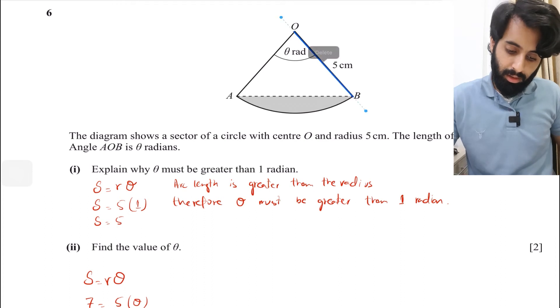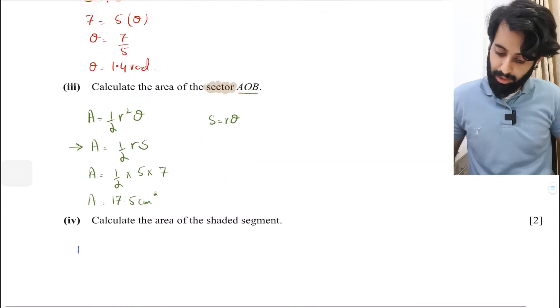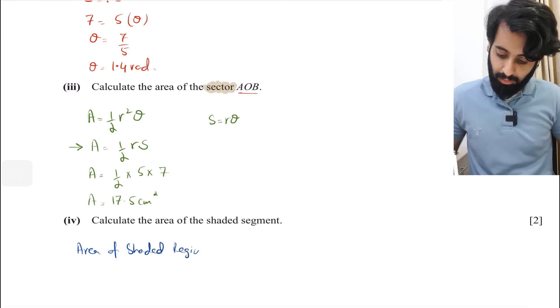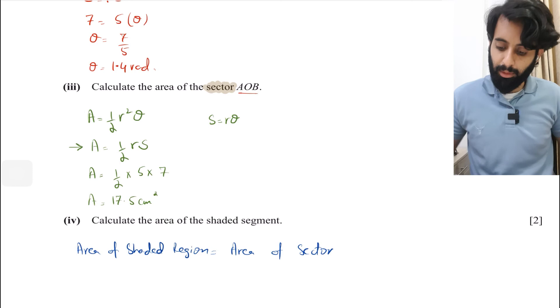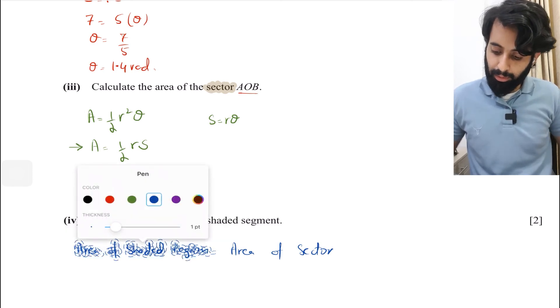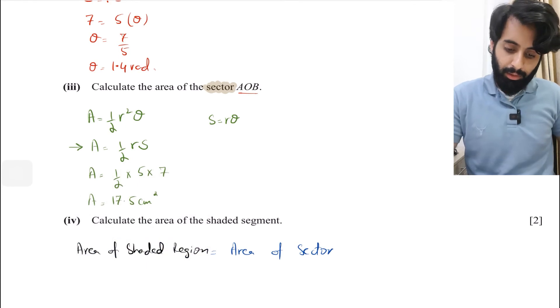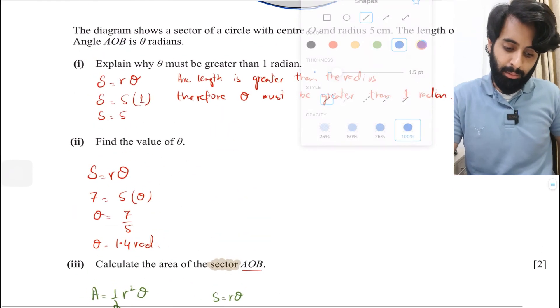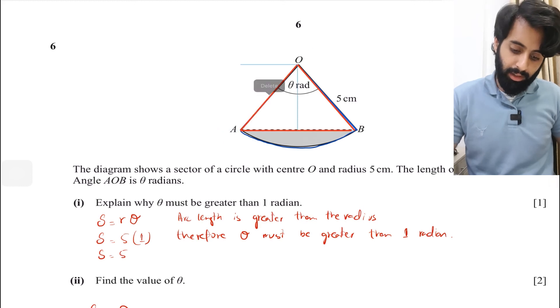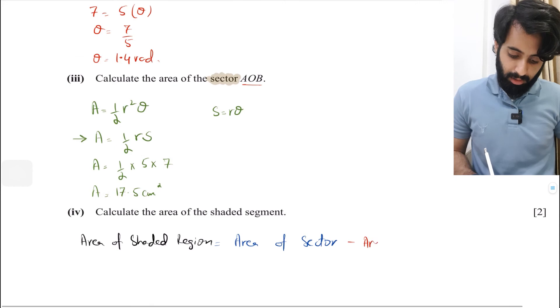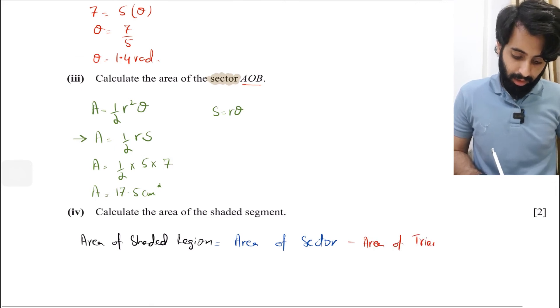I'll write that area of shaded region is going to be area of sector minus something. From it we need to subtract the area of the triangle. Let's see how we can get the area of sector. We already have it: 17.5.